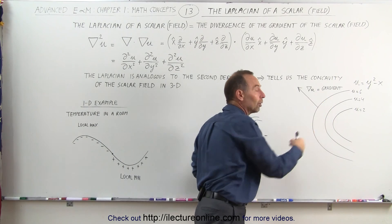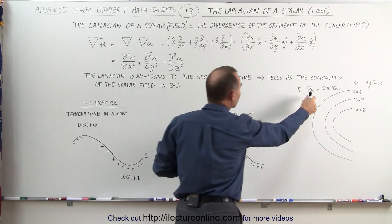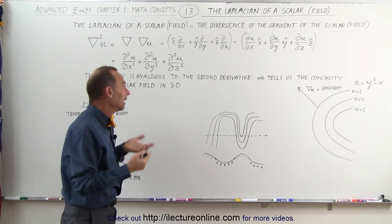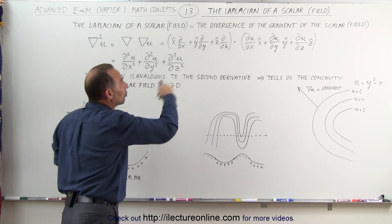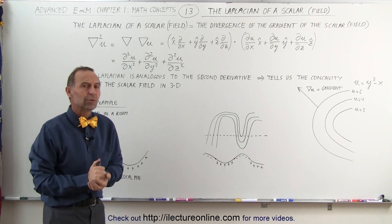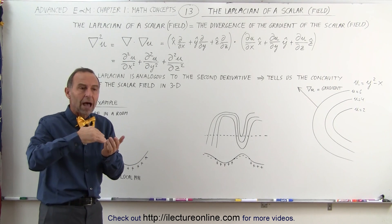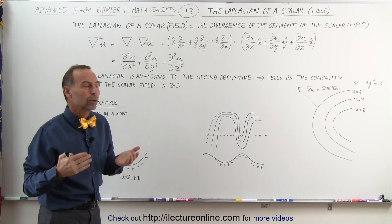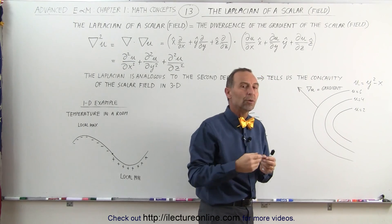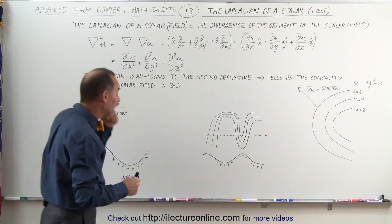The gradient, represented by this arrow here, is always perpendicular to a line representing a constant value. Now, if we take that gradient and we take the divergence of that gradient, it's analogous to taking the second derivative. The second derivative tells us the concavity of that scalar field in three dimensions — how the change is changing. If I move to a different location, how much is my gradient changing as I move from one point to another in my scalar field? That's what we mean by the Laplacian.